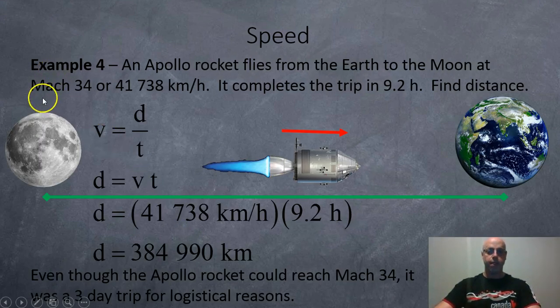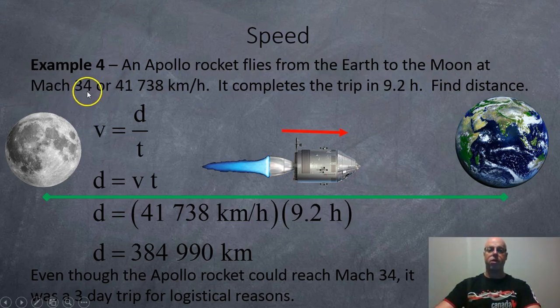Okay. One last example. An Apollo rocket flies from the Earth to the Moon at Mach 34. So, back in 1969 to 1972, we had ships flying from the Earth to the Moon at this speed. It takes 9.2 hours.